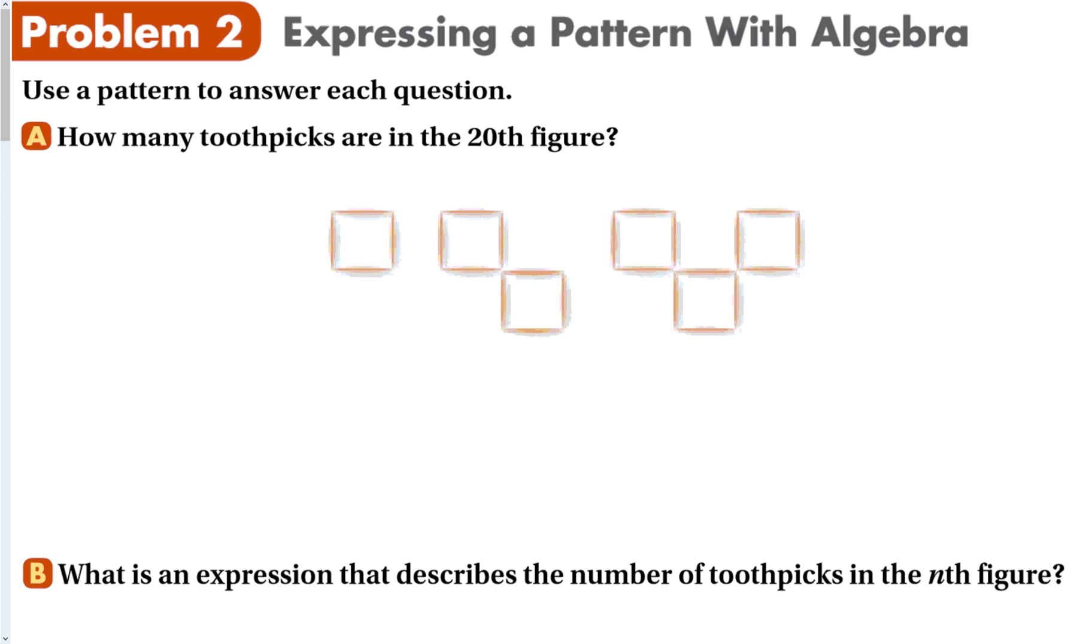You multiply two things, you add two things, you do something to get to the end. And usually we have to figure out what the process is to get from the input to the output. For instance, right here, how many toothpicks are in the 20th figure? So this is figure one, that's figure two, this is figure three, right? I don't want to draw 20 of these groups of toothpicks. So what I'm going to do is I'm going to make a table.